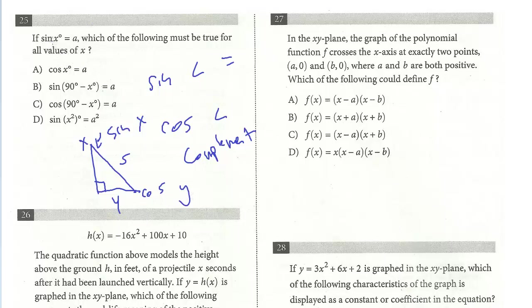So which of the following must be true for the sine of x if it equals a? It is the cosine of its complement, right? Whatever x is, 90 minus x is the complement equals a. So the answer here is C. Just remember that one cofunction identity.